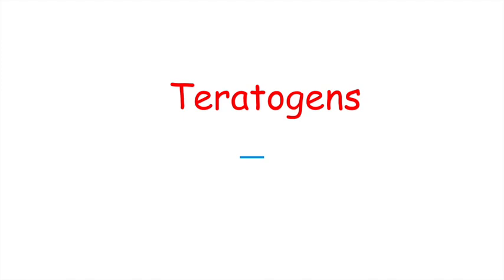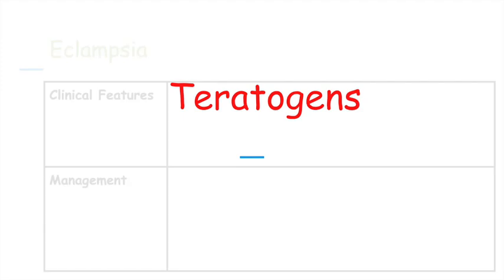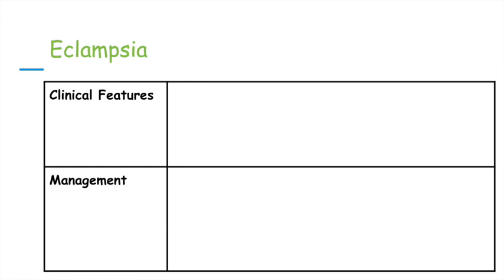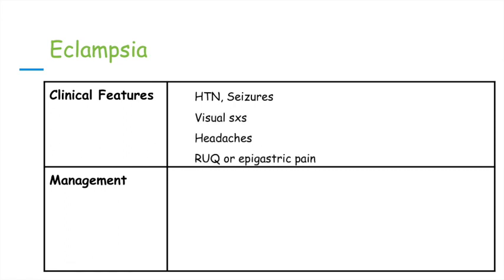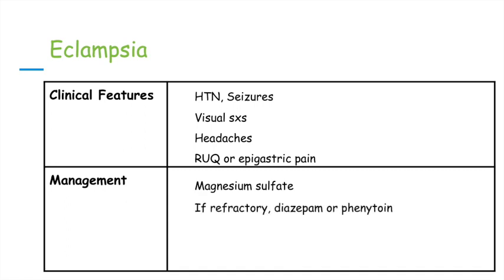Now let's look at eclampsia. Eclampsia is defined as preeclampsia with grand mal seizures. Clinical features for eclampsia include hypertension, seizures, visual symptoms, headaches, and right upper quadrant or epigastric pain. Management includes magnesium sulfate. If patients are refractory, we can give them diazepam or phenytoin. We also manage elevated blood pressure with antihypertensives, and the definitive management is delivery.